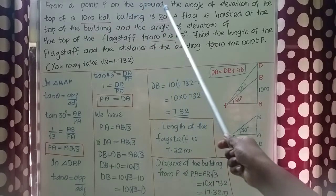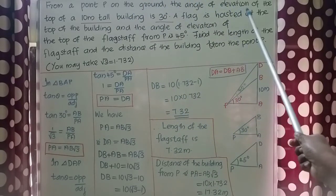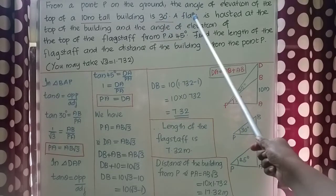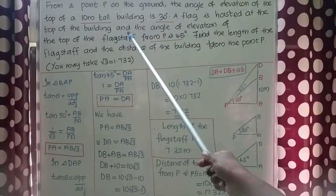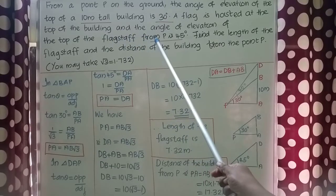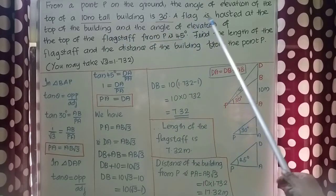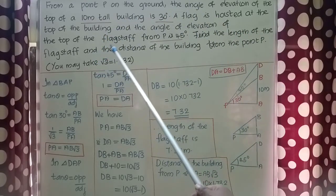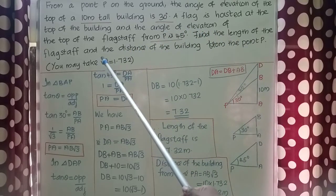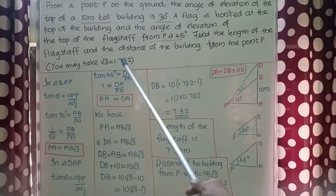Dear students, welcome to Blackboard. From a point P on the ground, the angle of elevation of the top of a 10 meter tall building is 30 degrees. A flag is hoisted at the top of the building and the angle of elevation of the top of the flagstaff from P is 45 degrees. Find the length of the flagstaff and the distance of the building from the point P. You may take root 3 equal to 1.732.